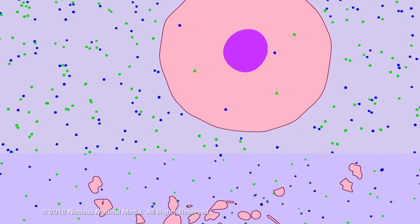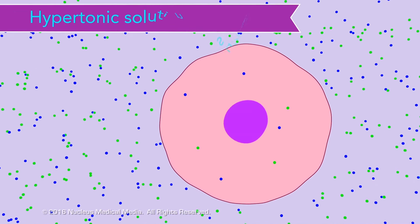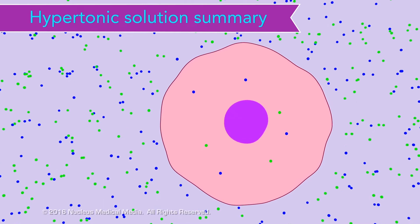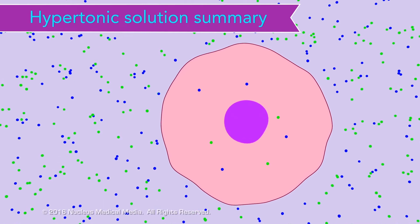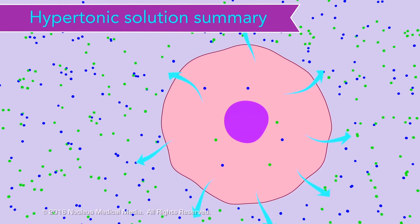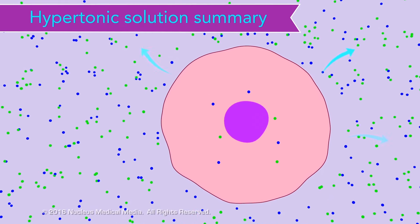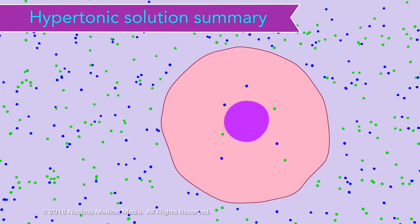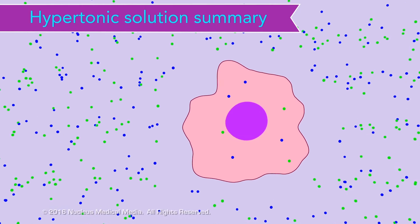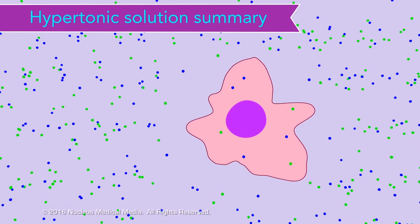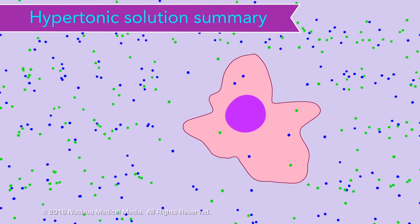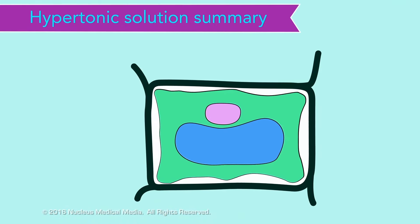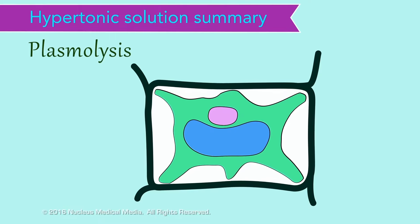Finally, in a hypertonic solution, the solute concentration outside the cell is higher compared to inside the cell. So, through osmosis, water molecules diffuse out of the cell. This causes the cell to shrivel up, and it can even implode or collapse if enough water leaves. In plants, this cell collapse is called plasmolysis.